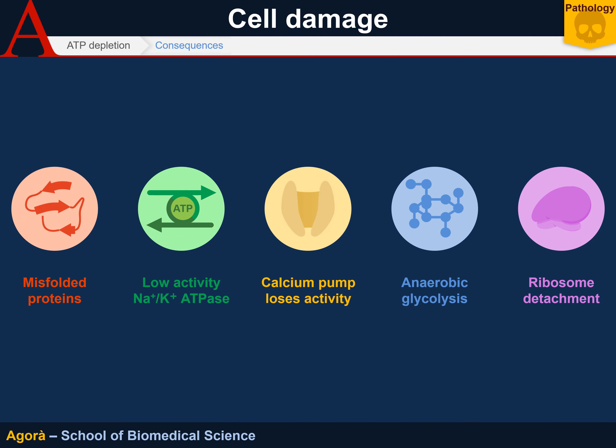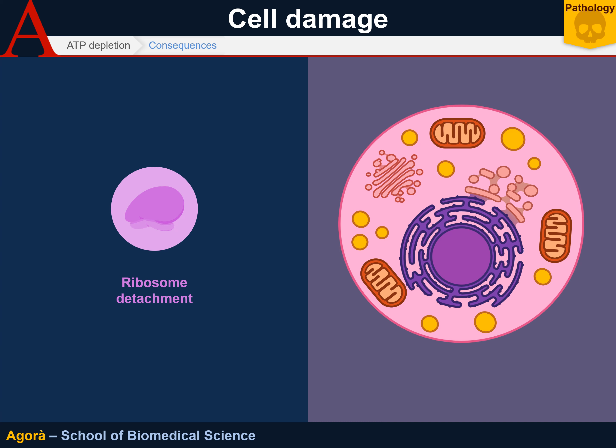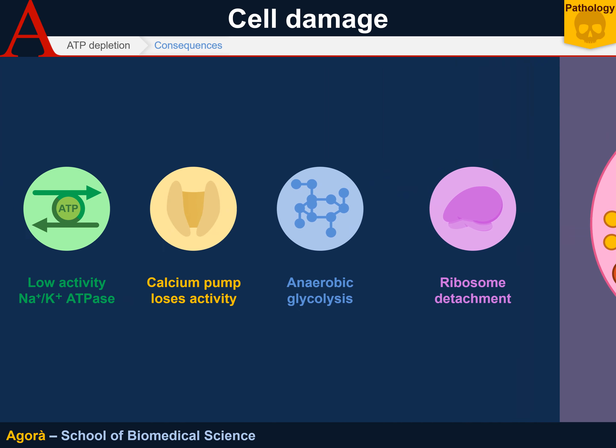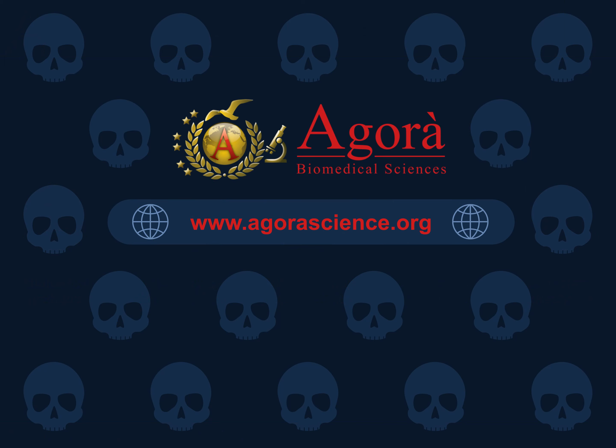The last consequence of ATP depletion is ribosome detachment. Protein synthesis requires a lot of energy — the ribosome itself, by binding the surface of the rough endoplasmic reticulum and the mRNA, requires energy. During depletion, ribosomes detach, and as a consequence, protein synthesis decreases and lipids accumulate in the cytoplasm due to the lack of carrier proteins that would normally complex lipids. Phospholipids also cannot be synthesized since the required enzymes — which are proteins — are absent, ultimately damaging the membrane.